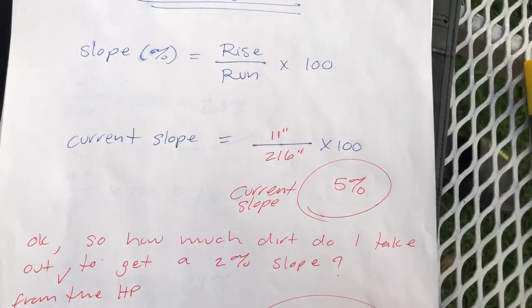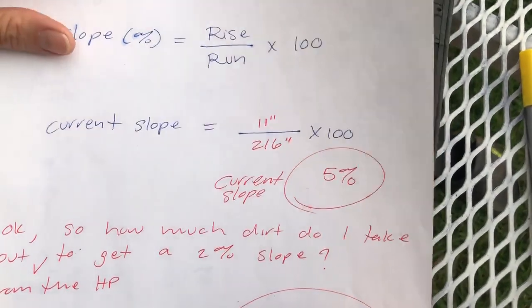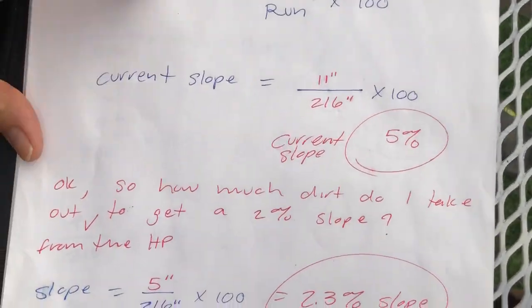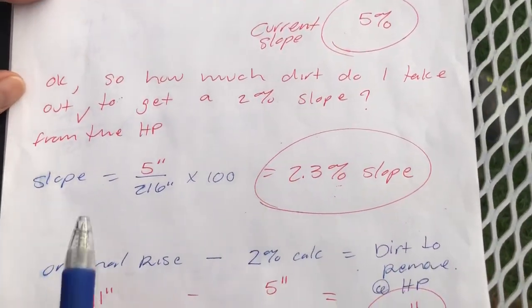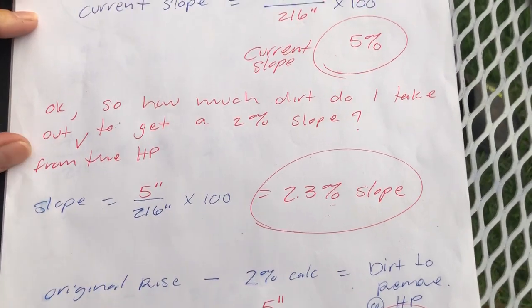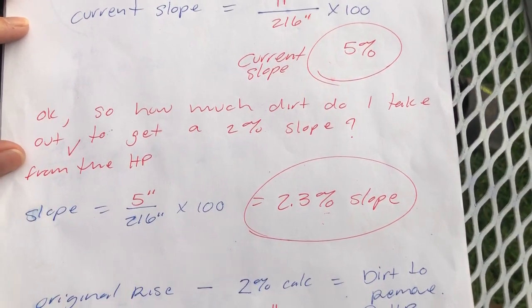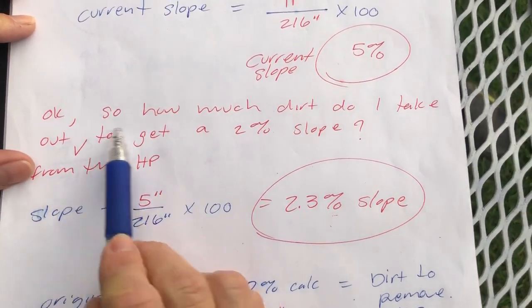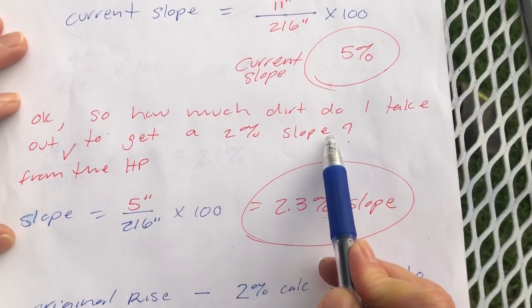So now the question is: how much dirt do I take out from the high point to get down to a 2 percent slope?